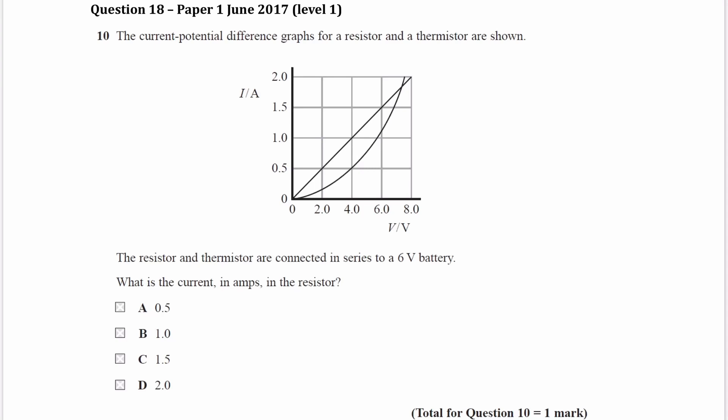We have the current potential difference graphs for a resistor and a thermistor. So we're trying to work out what the current will be if we connect the two things in series to a 6-volt battery.